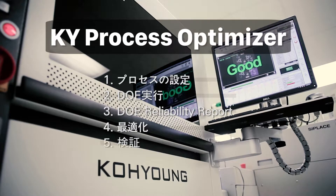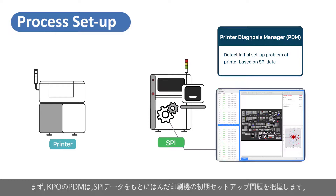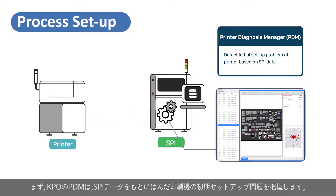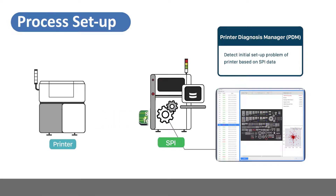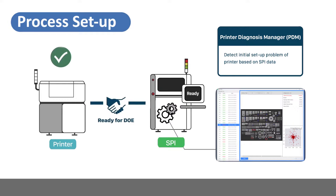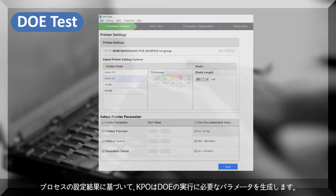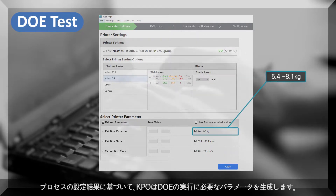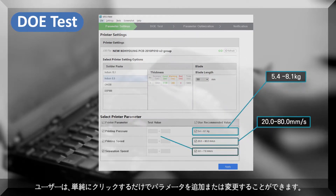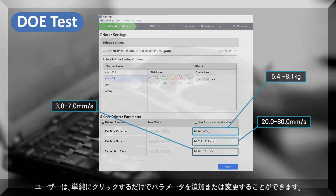How does KPO work? First, the PDM will detect initial printer and SPI setup problems based on SPI data. Based on process setup results, KPO generates the necessary parameters to run a DOE. Users can modify these parameters with a simple click.